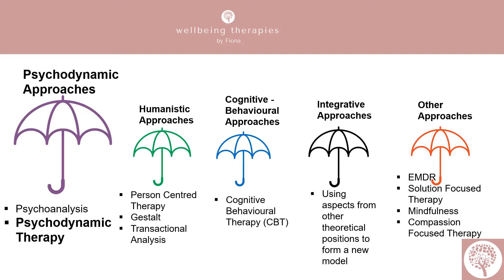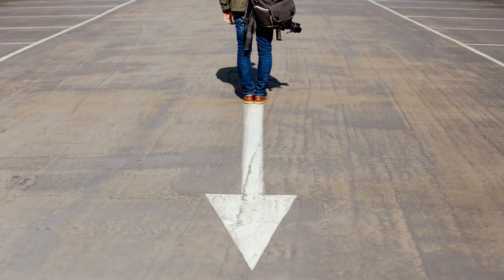In Module 2, we looked at the three main theoretical perspectives. The first was psychodynamic approaches. This approach focuses on changing problematic behaviours, feelings and thoughts by discovering their unconscious meanings and motivations. We do this by exploring the past in psychodynamic theory — we find the answers from the past and these help us explain a person's current behaviour.